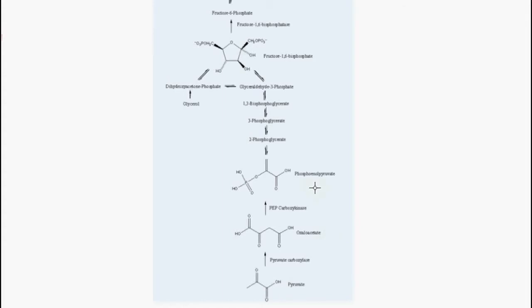It's converted into phosphoenolpyruvate using the enzyme phosphoenolpyruvate carboxykinase, and this reaction requires GTP to be converted into GDP.